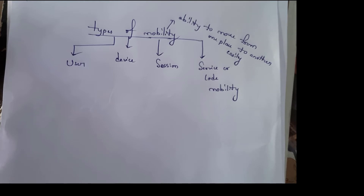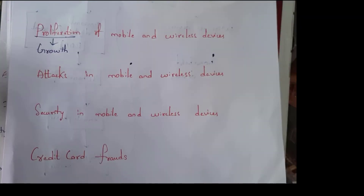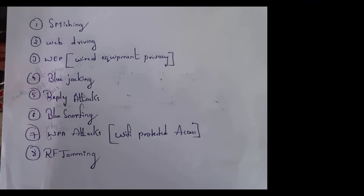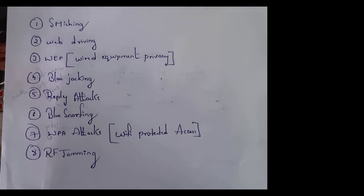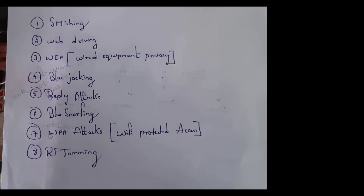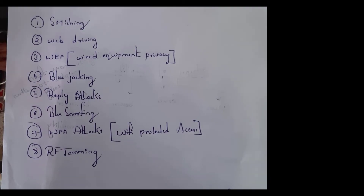Next are attacks in mobile and wireless devices. First one is smishing. The name itself says attacking a person by sending messages. In this, the attacker sends malicious code or malicious links through SMS. Once the user clicks on those links, the hacker can gain that person's information.